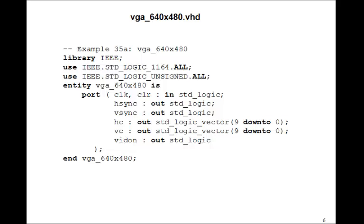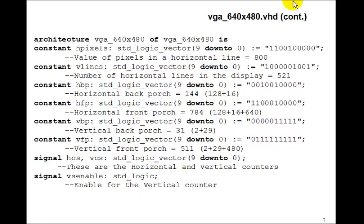Here is the VHDL program. We'll call it VGA 640 by 480. We've got a clock and clear coming in. And the outputs are going to be the H-sync and V-sync, horizontal and vertical sync pulses. And we'll bring out the horizontal counter and the vertical counter. They'll be 10-bit counters and the video-on signal, which is 1 when you're in the display region. So first, we'll define a bunch of constants. H-pixels is going to be 800. That's the number of pixels along the vertical line. So this is the binary value for 800. So that's what H-pixels is going to be.